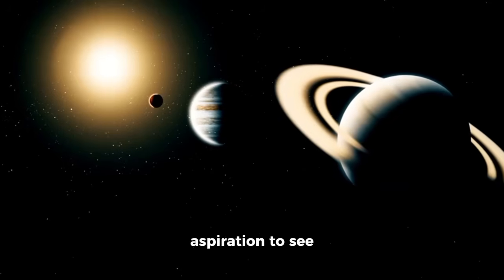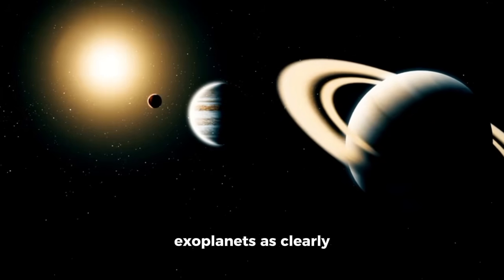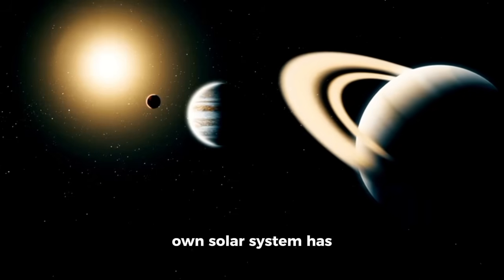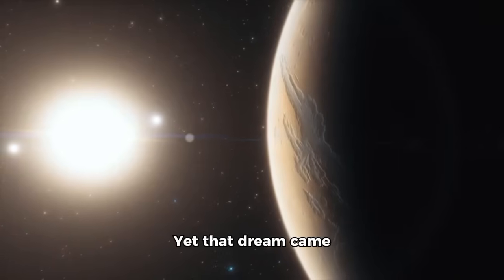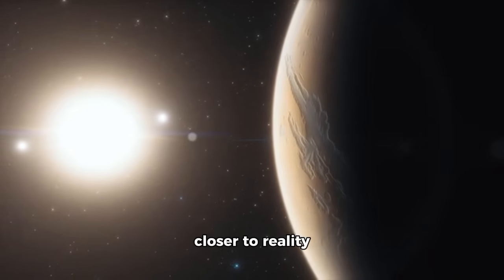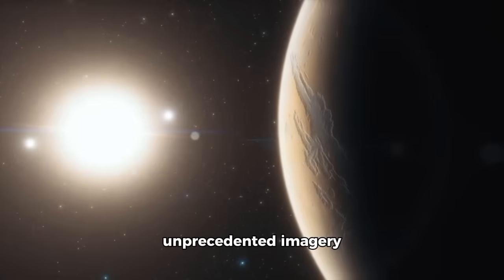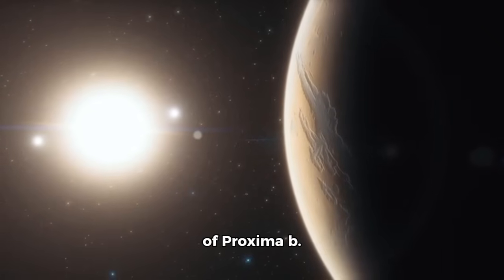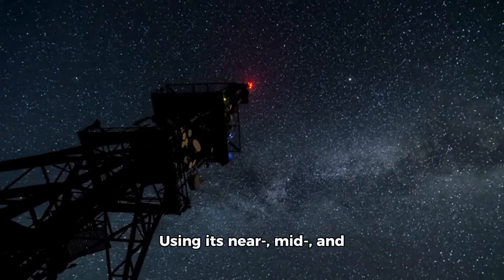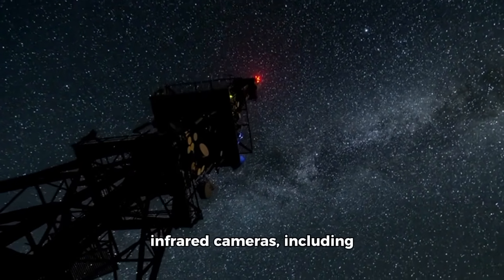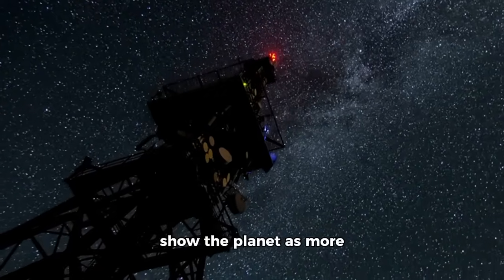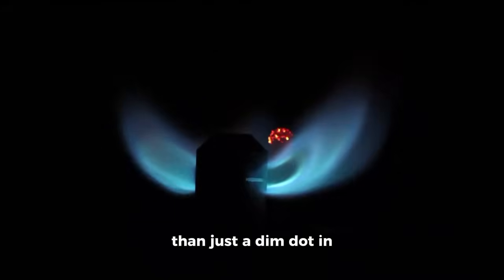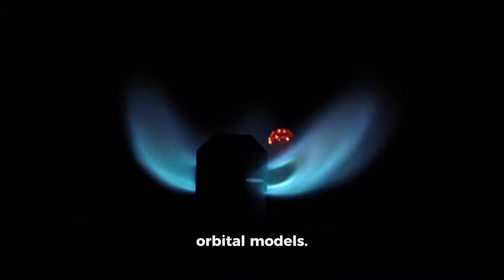For astronomers, the aspiration to see exoplanets as clearly as worlds within our own solar system has always felt distant. Yet, that dream came closer to reality when JWST unveiled unprecedented imagery of Proxima b. Using its near, mid, and infrared cameras, including the MIRI instrument, the telescope cut through the glare of its host star to show the planet as more than just a dim dot in orbital models.